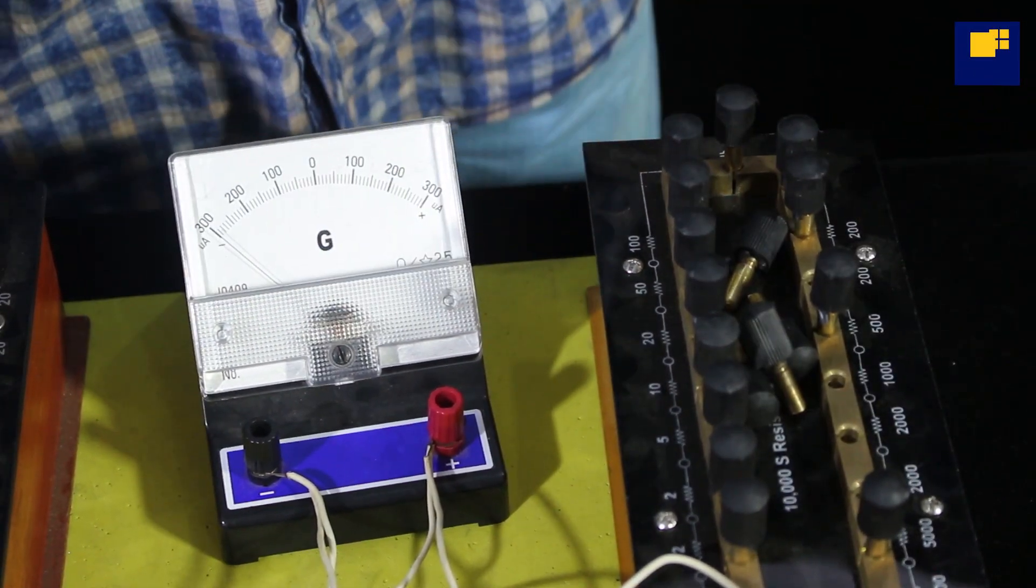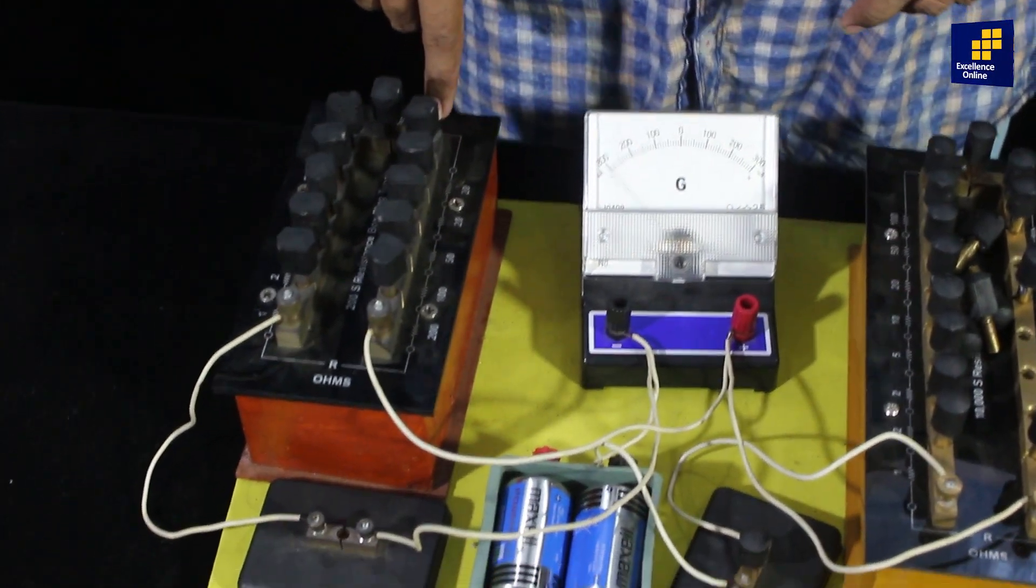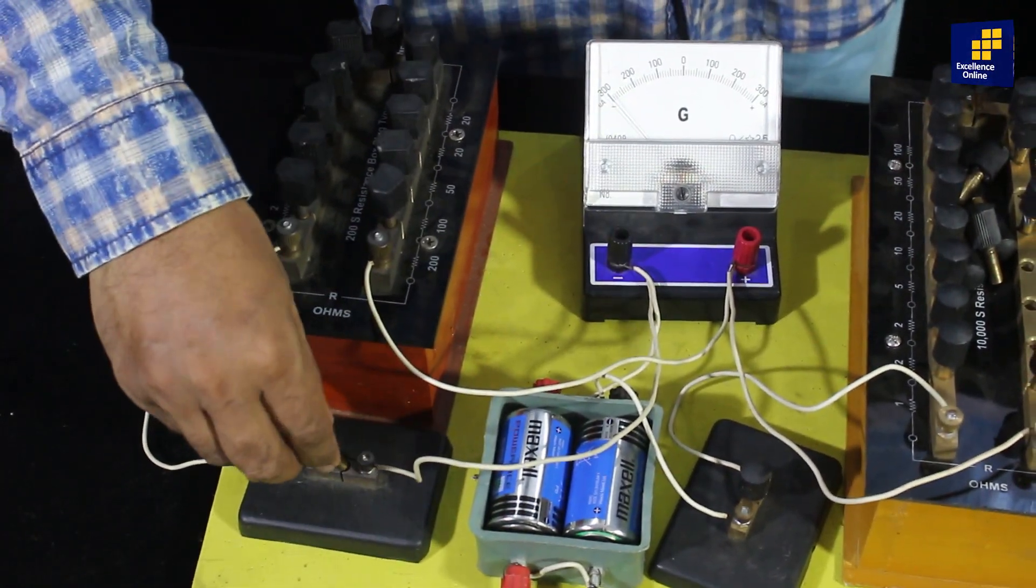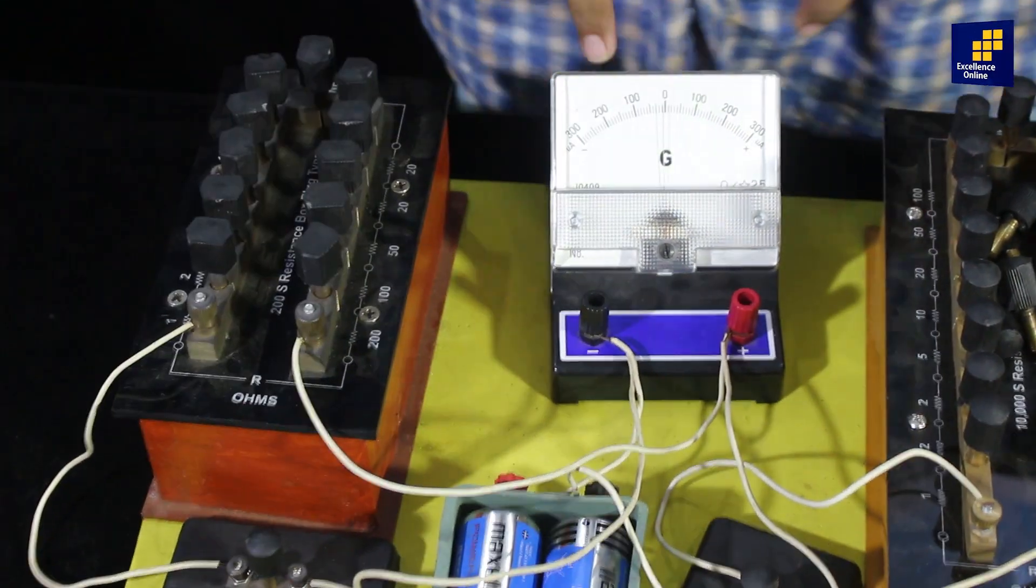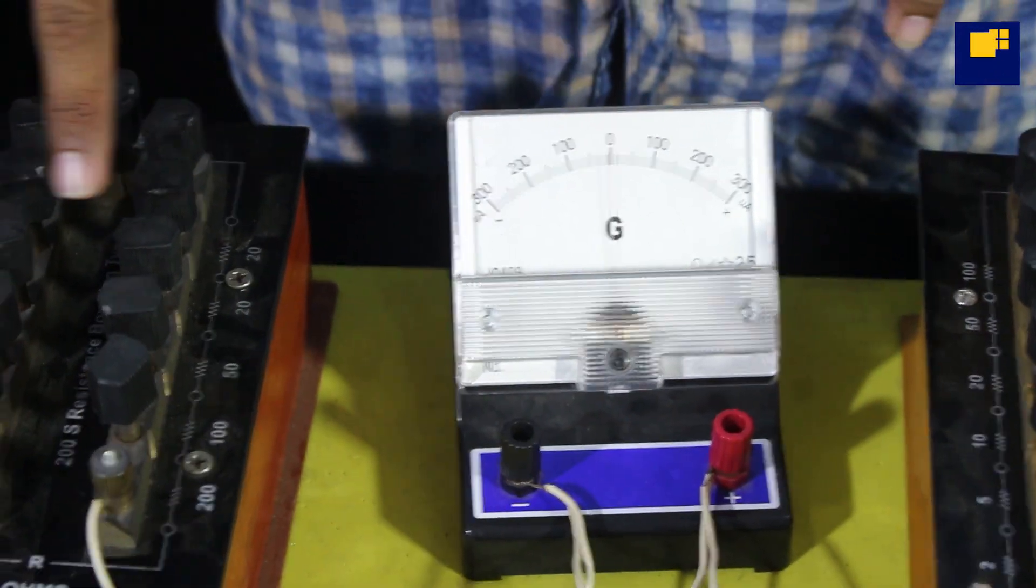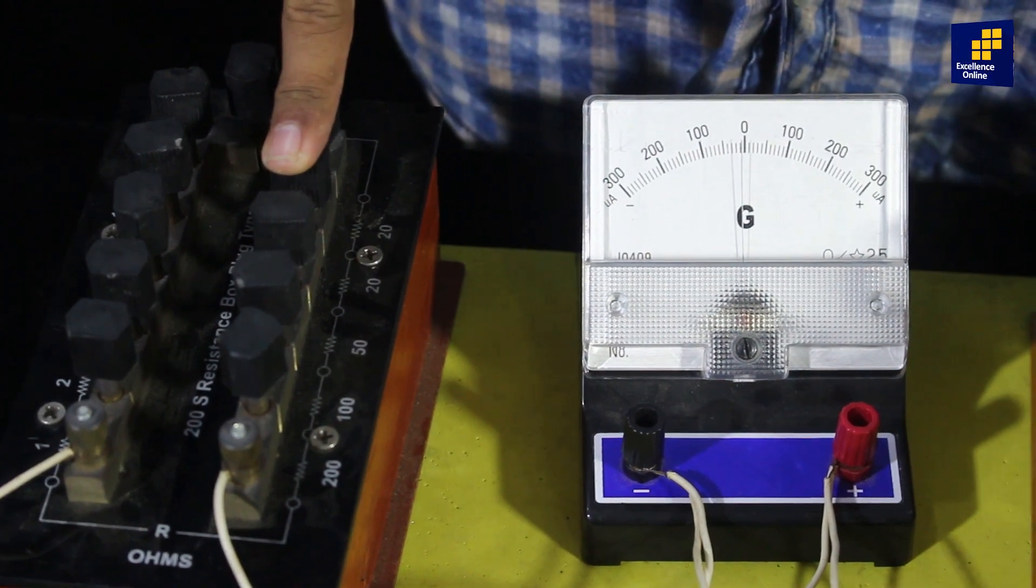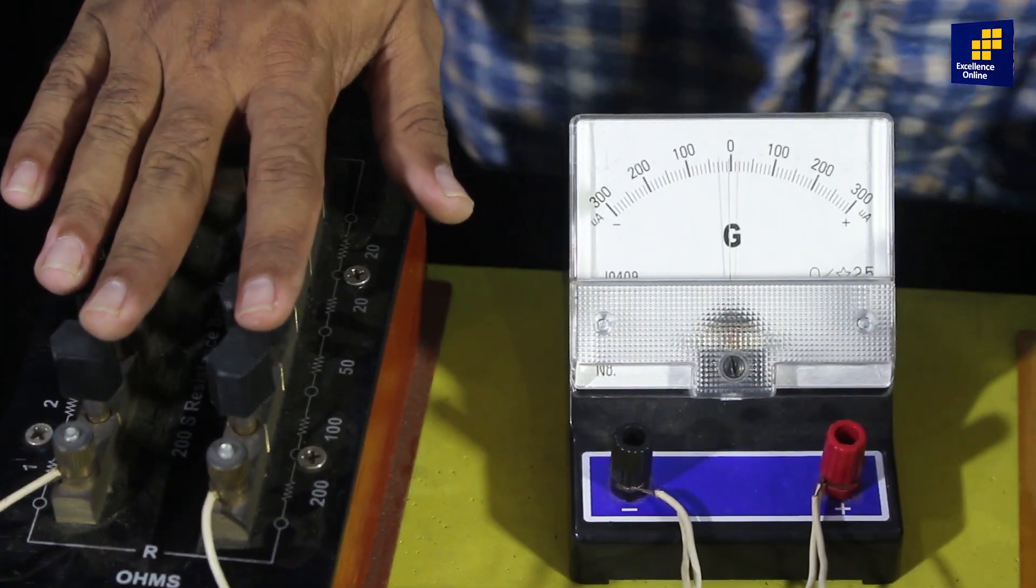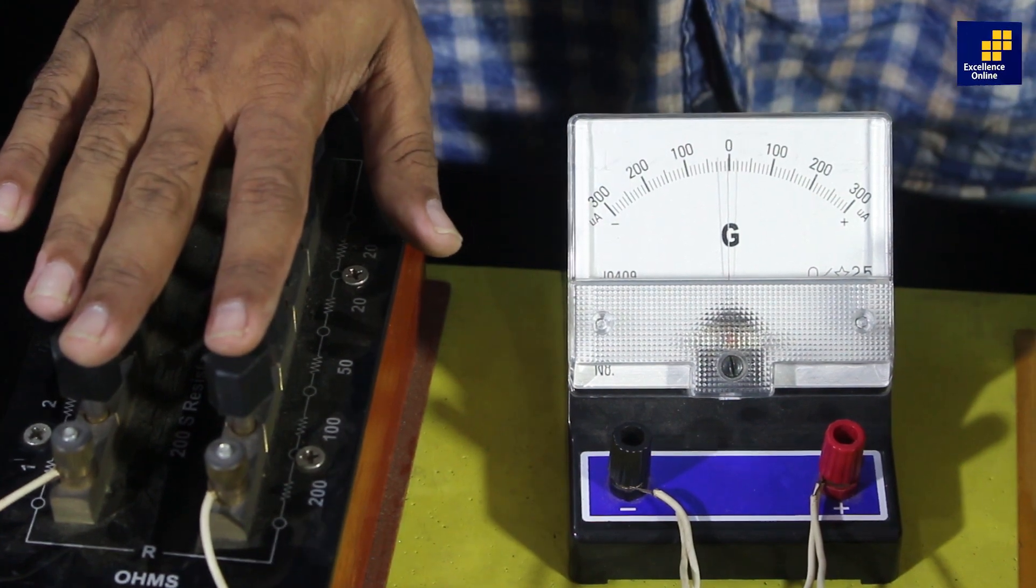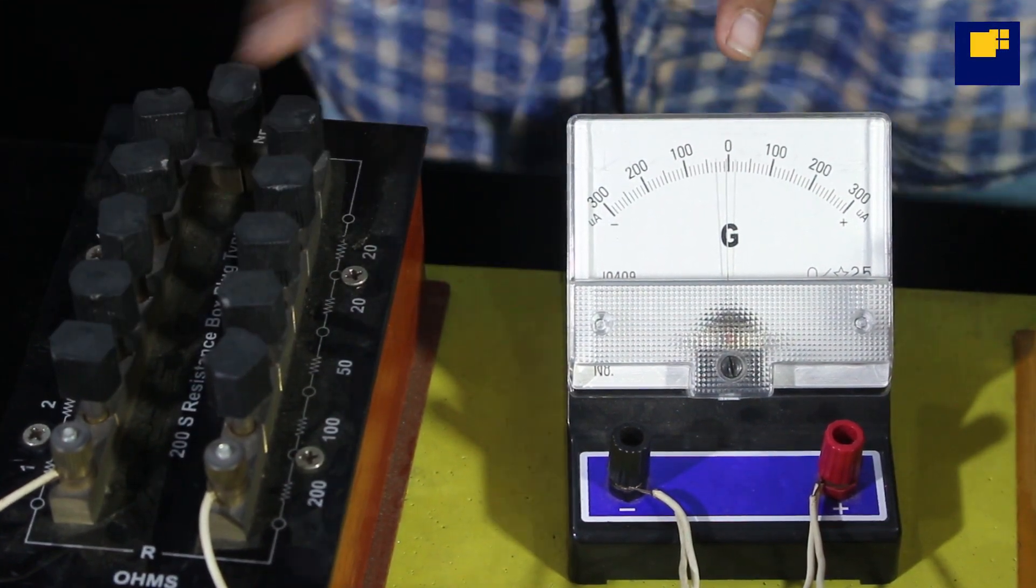Now we introduce this parallel shunt resistance by connecting this key. As I insert this key, all the current passing through this galvanometer will pass through this resistance. और चूँकि इस wire की resistance zero है, तो all the current passes through this low resistance path. अब हम यहाँ यह दोनों parallel में हैं.